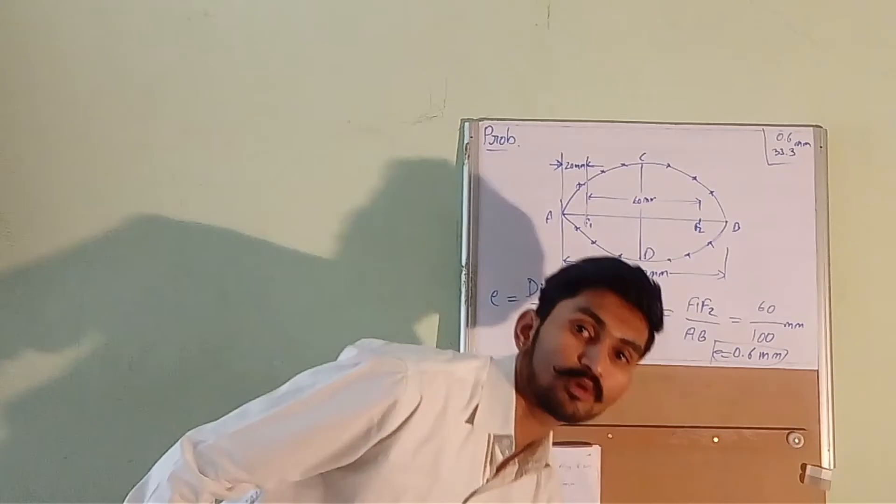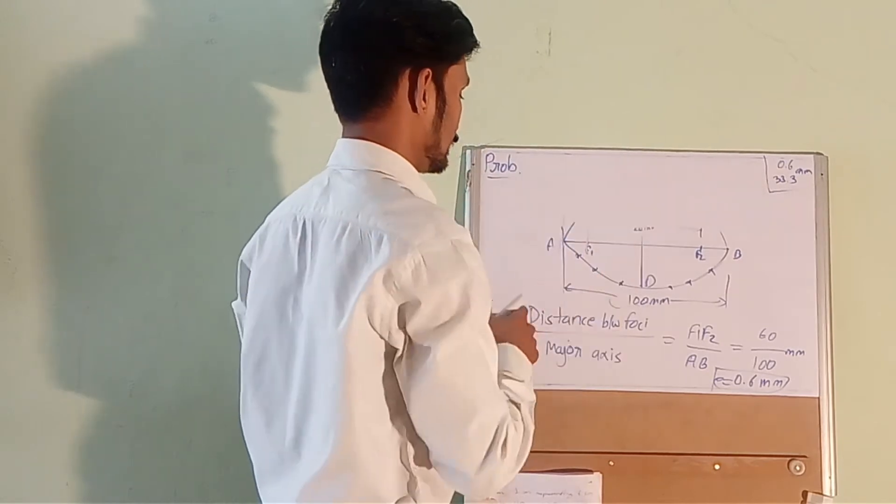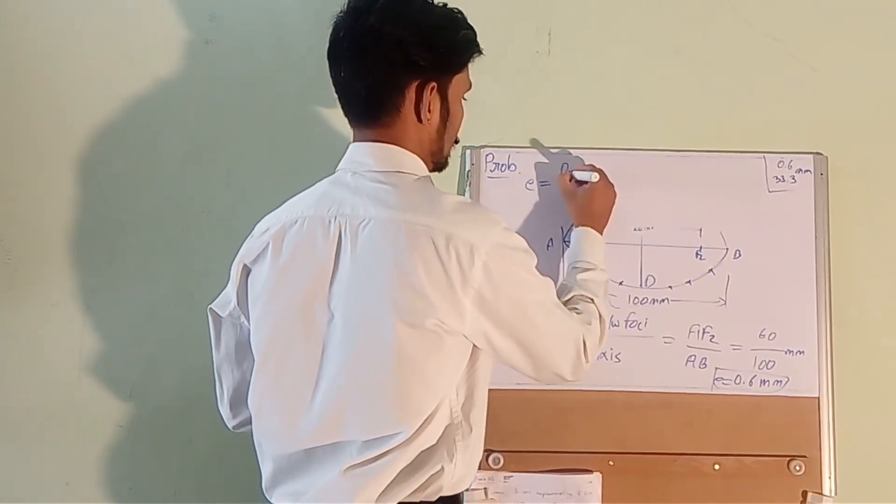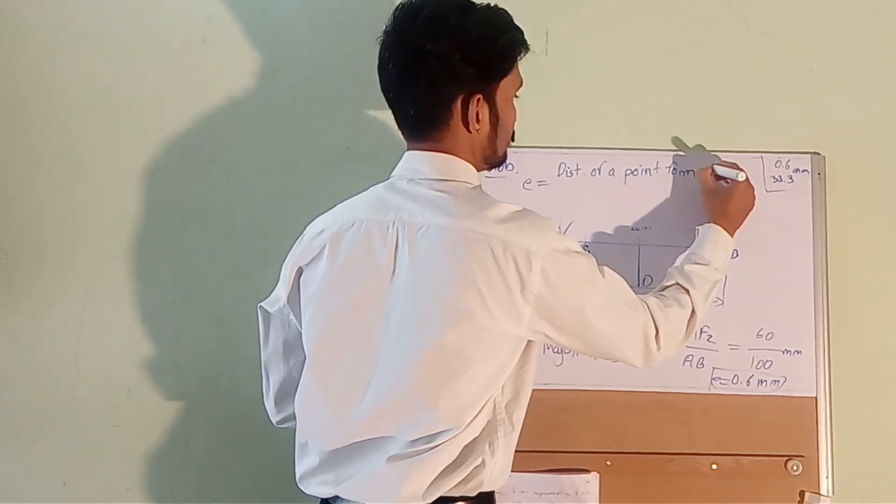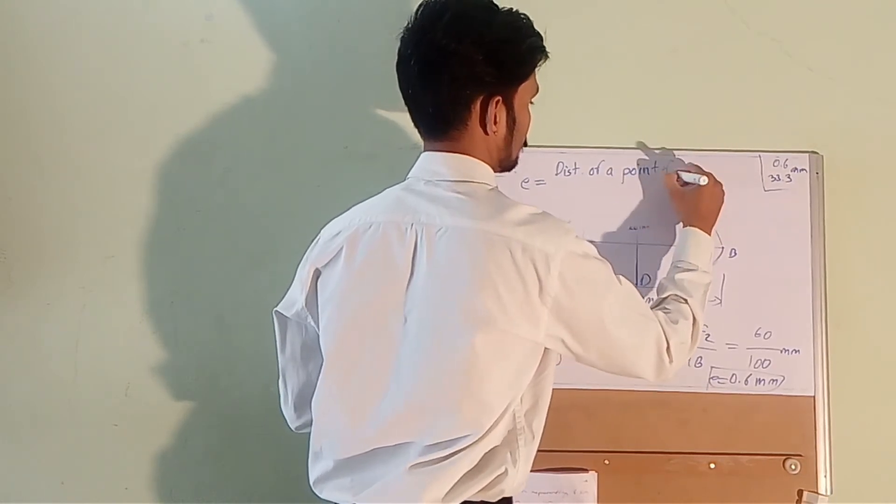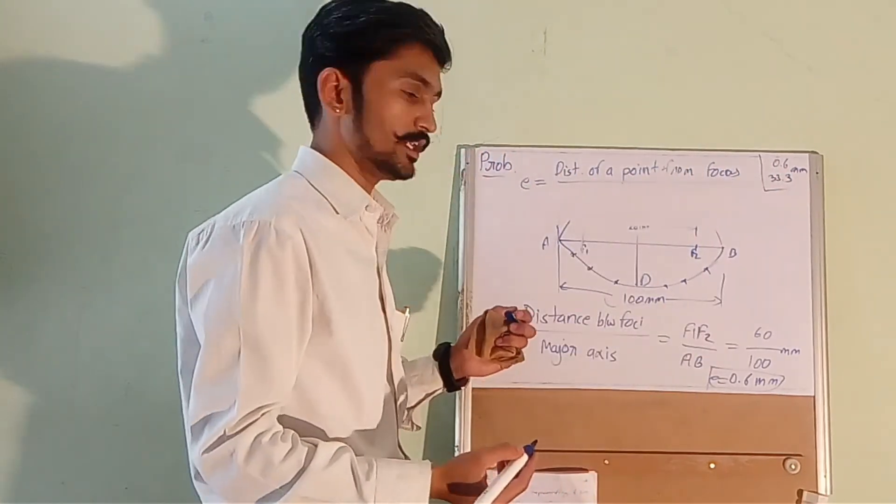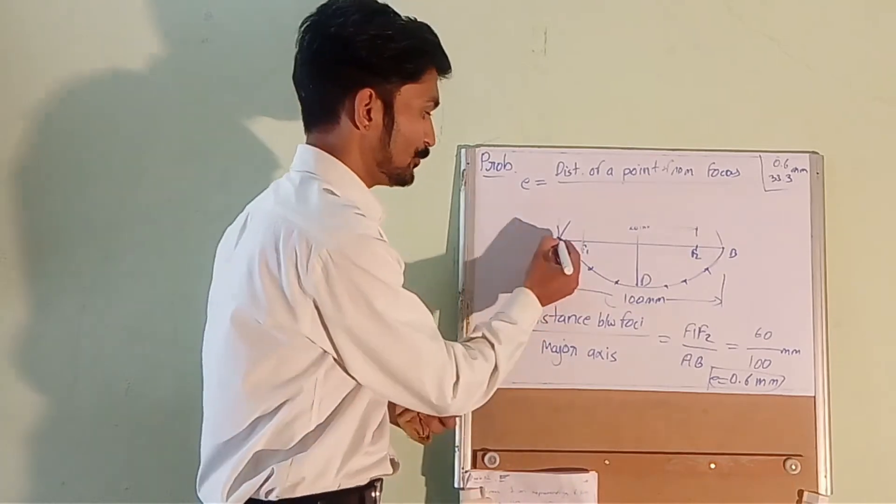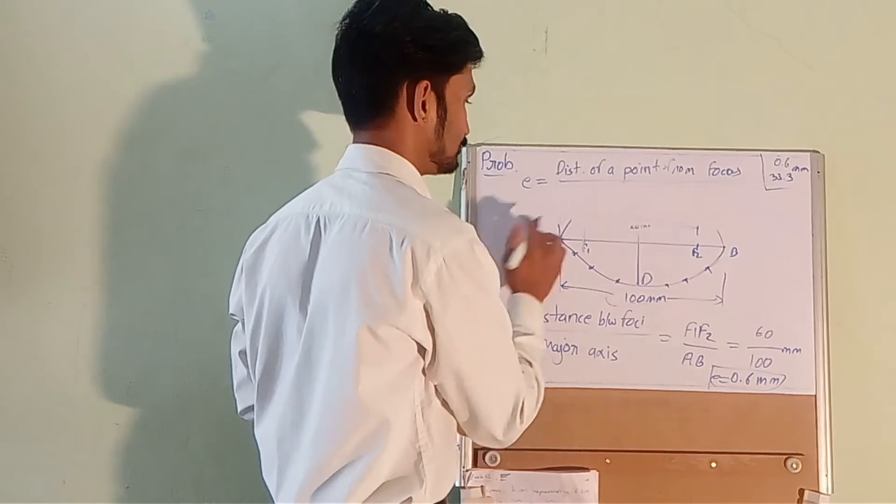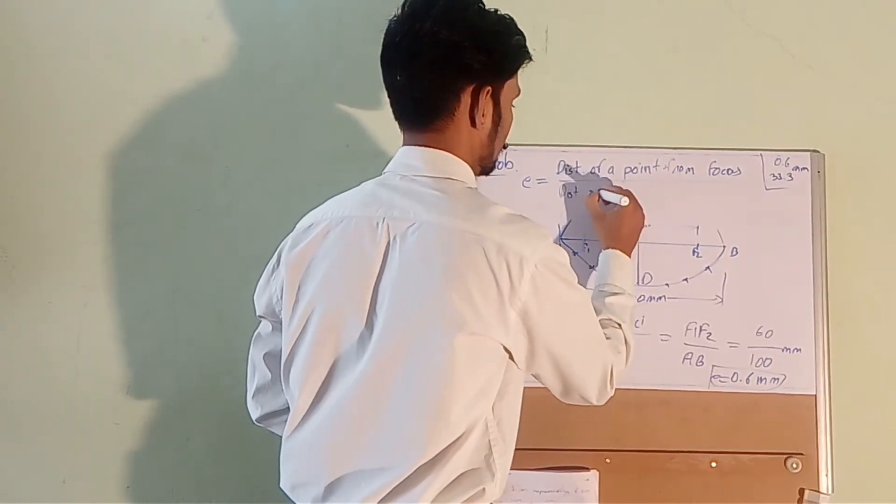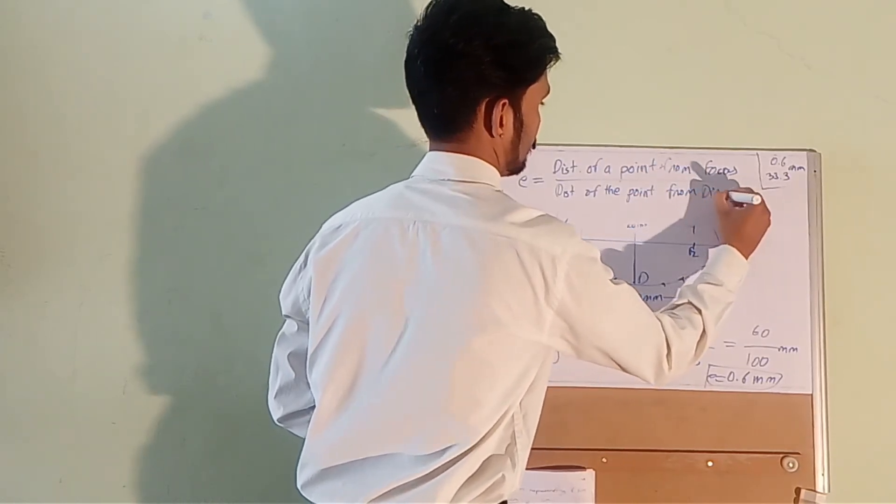Now we have another formula for calculating eccentricity, which is distance of a point from focus divided by the distance of that point from the directrix. So the directrix will be here at point M from directrix.